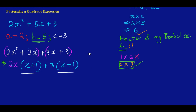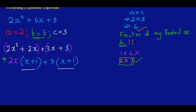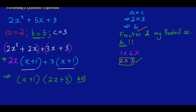Let me pull up my screen a little. After factorizing by grouping, since we have the same thing in both brackets, we rewrite what's inside one bracket — that's x plus 1 — and combine what's on the outside of the other two brackets — that's 2x plus 3. So our answer is (x + 1)(2x + 3).